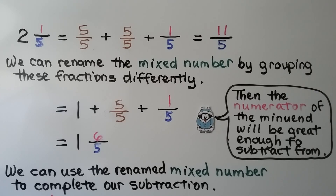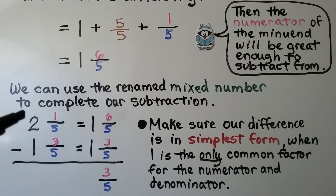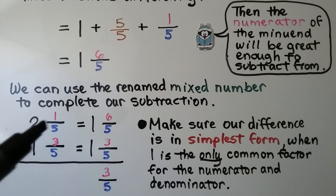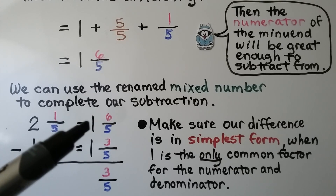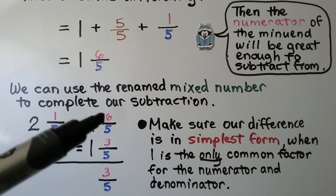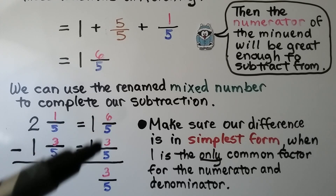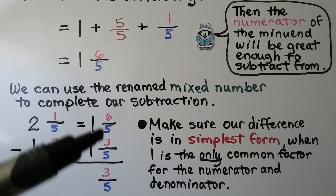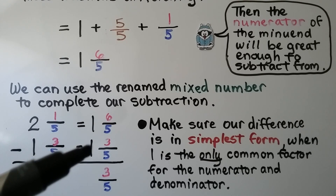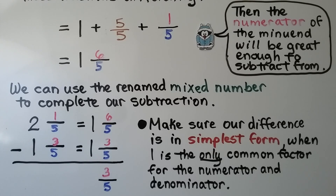We can use the renamed mixed number to complete our subtraction. We had 2 and 1 fifth minus 1 and 3 fifths. We changed the 2 and 1 fifth into 1 and 6 fifths. Now we have 6 minus 3, which is 3 — that's 3 fifths. And 1 minus 1 is 0. We have 3 fifths. We make sure our difference is in simplest form when 1 is the only common factor for the numerator and denominator.